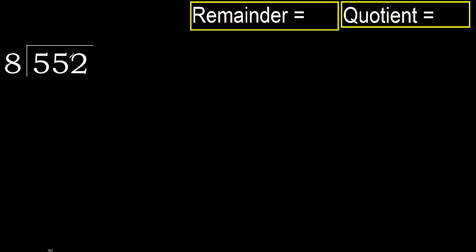552 divided by 8. 5 is less, therefore next. 55 is not less, therefore work with 55. Multiply 8 by which number is nearest to 55 but not greater.